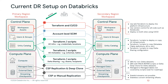So what does it look like at a tactical level to do this replication? This slide may look a little bit intimidating, but we're going to walk through it step by step — this is the current state. Walking through top to bottom, first we need to talk about workspace assets — what lives in the control plane, like notebooks, cluster definitions, and job definitions. We recommend that customers use a combination of Terraform and CI/CD to do the replication between the primary and secondary workspaces.